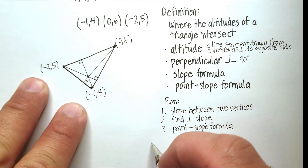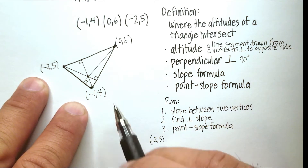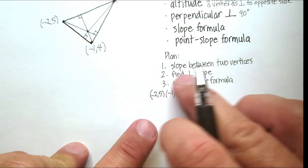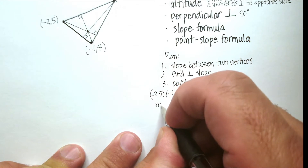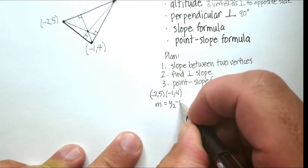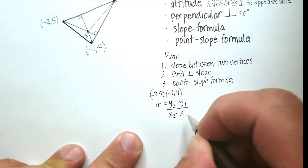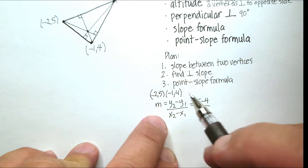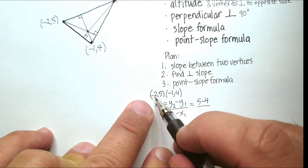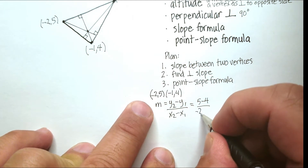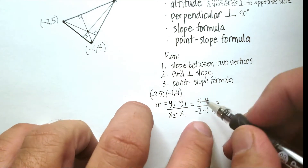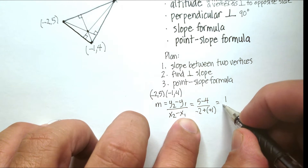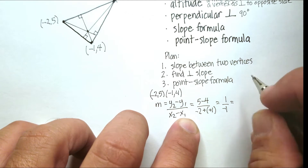Let's choose the first two vertices: (-2, 5) and (-1, 4). Using the slope formula m = (y₂ - y₁)/(x₂ - x₁), we get (5 - 4)/(−2 − (−1)) = 1/(−1) = −1. So the slope between these two vertices is −1.